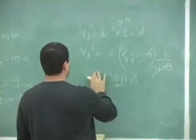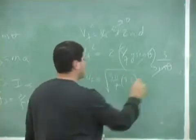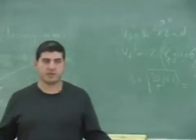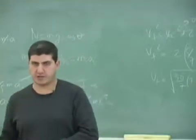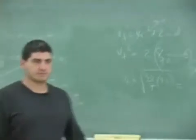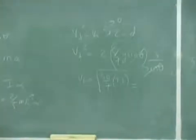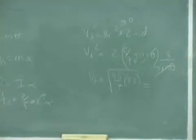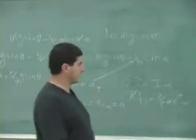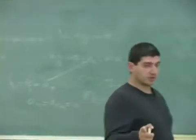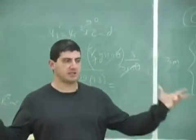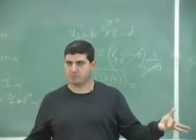Then take the square root of both sides and see what you get. So this is how you do the problem from a force-torque perspective. You get the acceleration using Mg sine theta and substitute it in. Then once you get A, you can get V final. If it gives the same answer, that's perfect — it confirms there are two completely different ways of approaching the problem.